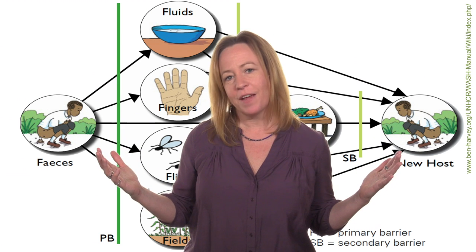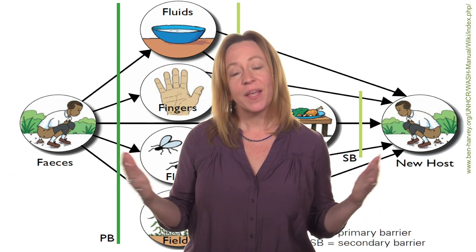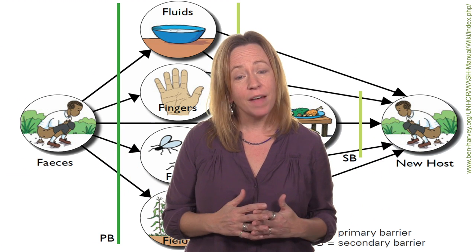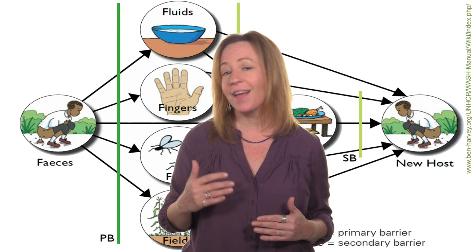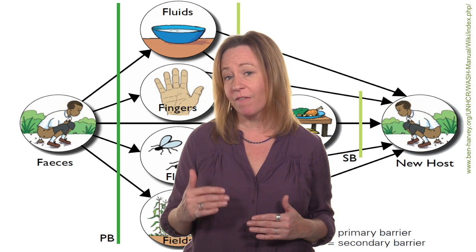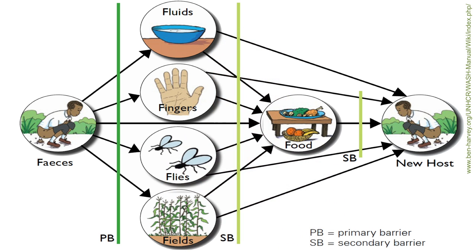This is an F diagram. It is called that because there are six important F words covered in the diagram. They are feces, fingers, flies, fields, food, and fluids. Do you know what these six F words have to do with treatment objectives?